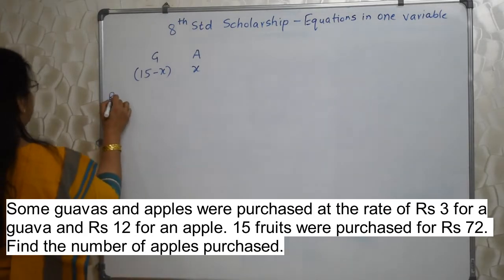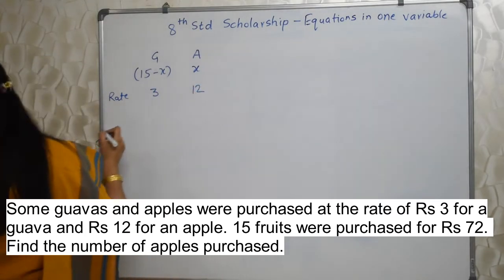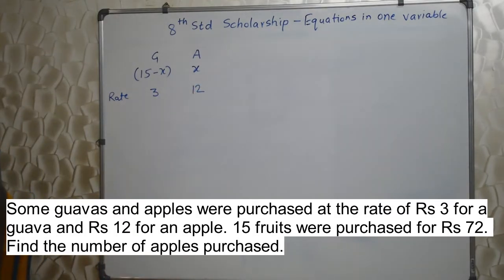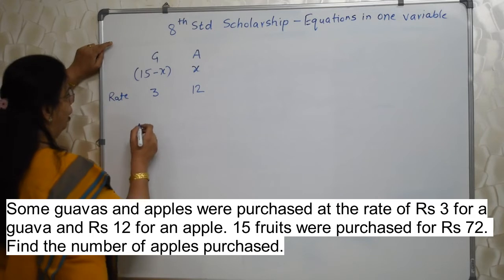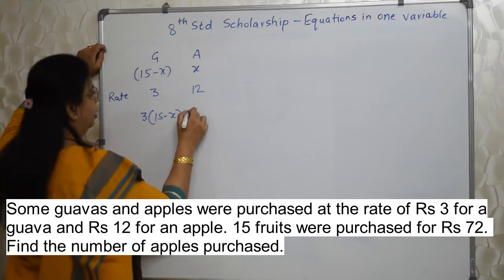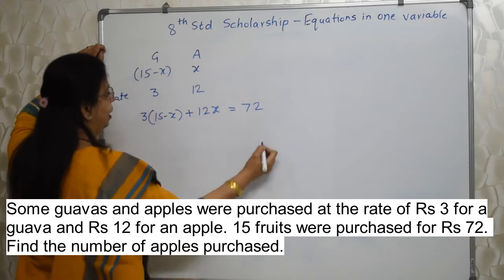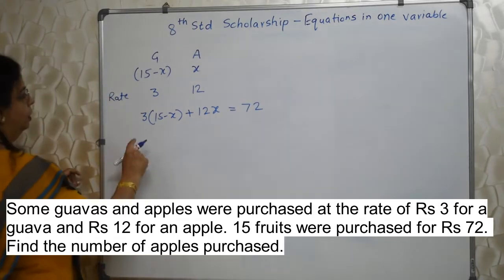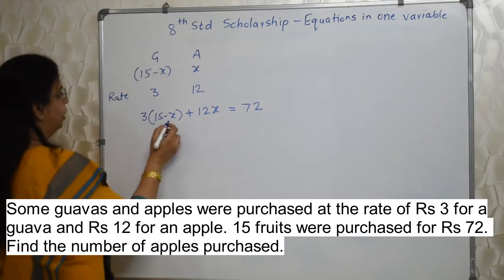Now they have given the rate also. Rate of guava is Rs 3, apple is Rs 12 for each. If we buy 15 minus x guavas at the rate of Rs 3 per guava, then how much will we spend? 3 into 15 minus x. Similarly here, 12x. Total amount spent they have given as 72. So this is the equation with one variable. Variable is this x here. So let's solve it.